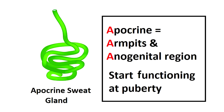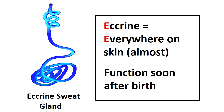A lot of people get eccrine and apocrine glands mixed up, so here's a simple way to remember the difference. Apocrine starts with an A because those glands are mostly found in the armpits and anogenital region, which also start with an A. And since you tend to grow hair in those areas during puberty, that's when they become active. Eccrine starts with an E because they are almost everywhere on the skin.